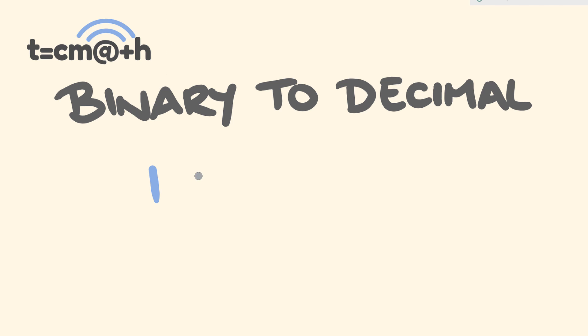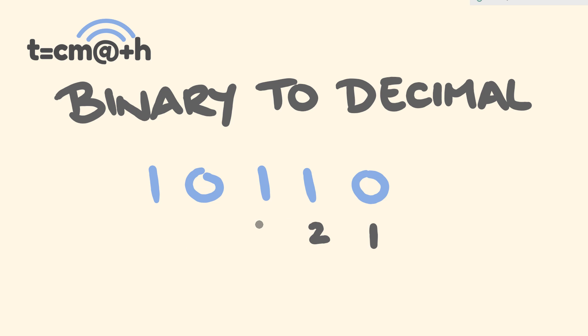An example: what is 1, 0, 1, 1, 0 as a decimal? The way that you convert these across is fairly simple. We're going to start underneath the far right number and put a 1. Then as we move progressively left, we double. So 1, double that is 2, double 2 is 4, double 4 is 8, and double 8 is 16.